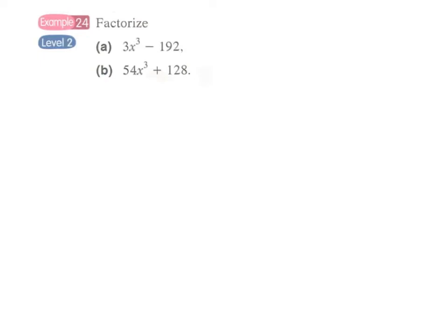Example 24: factorize 3x³ - 192. Since this is not exactly a cube number but has the power 3, and 192 is also not a cube number, we cannot apply directly, or at least at this stage, the difference of two cubes. So what can we do? What other factorization methods can we use?